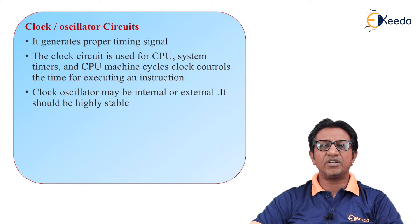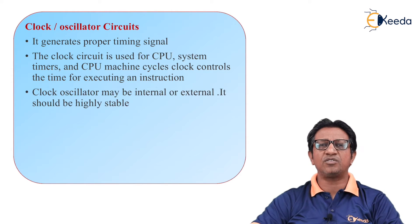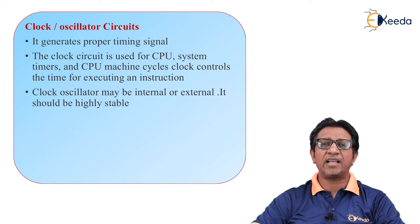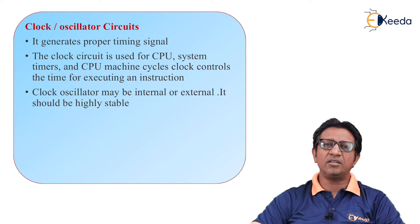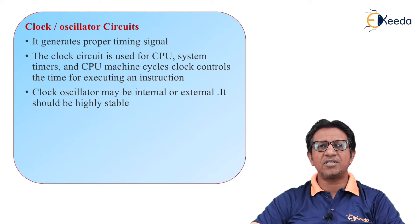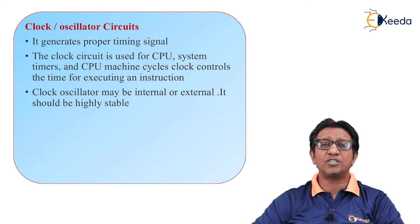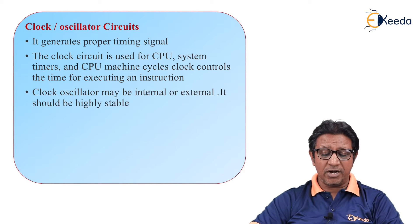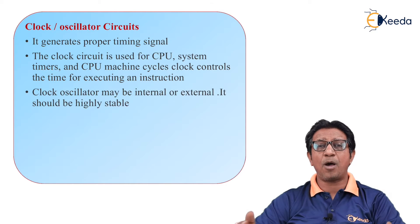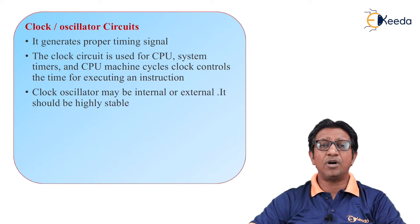For example, the watch on your hand — if it is not functioning properly, running slow or fast, and you want to catch a train, you may miss that train. That illustrates the importance of clock stability. Similarly in an embedded system, for proper functioning, the clock must be highly stable.